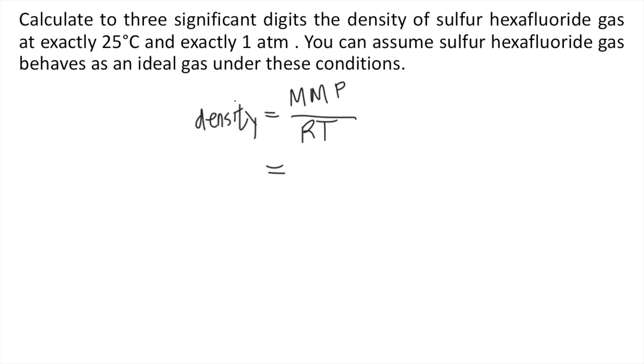So in the problem, we are given sulfur hexafluoride. So that's SF6. So let's solve first the molar mass of SF6. Sulfur, if you look at your periodic table, is 32.07 grams per mole plus there are six fluorines. So six times the molar mass of fluorine is 19 grams per mole. So 32.07 plus six times 19, that is equal to 146.07 grams per mole. So you put that as the molar mass.